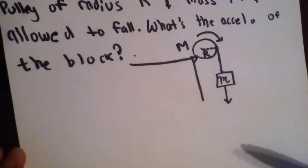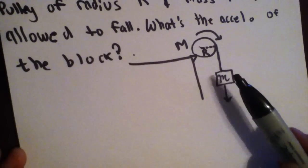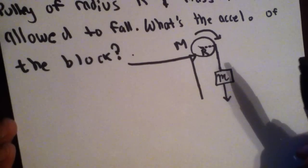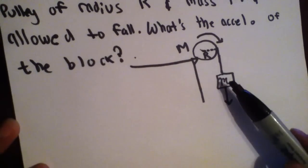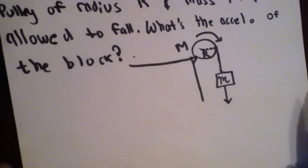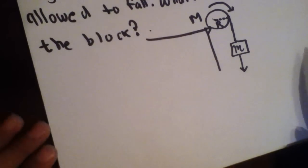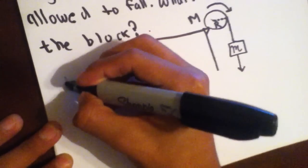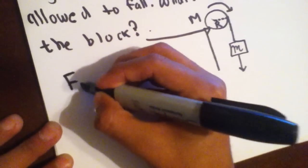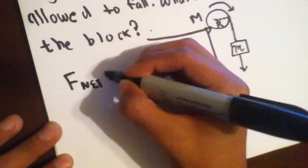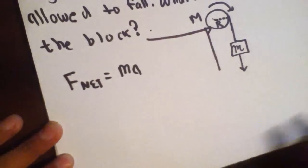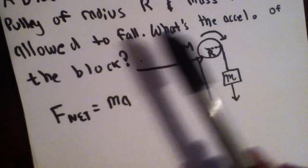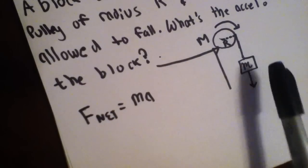Our main goal is to find the acceleration of this block. Since you're not giving it any numbers, you're just going to be doing it in terms. So in terms of M and R and M, big M right here. So then, first off, I'm going to start off with Newton's second law. And that is, F net equals MA. Well, we want to find the acceleration of this block in the downwards direction because it says right here, is allowed to fall. So that means this is going down.